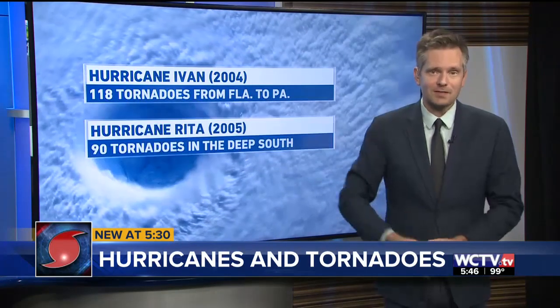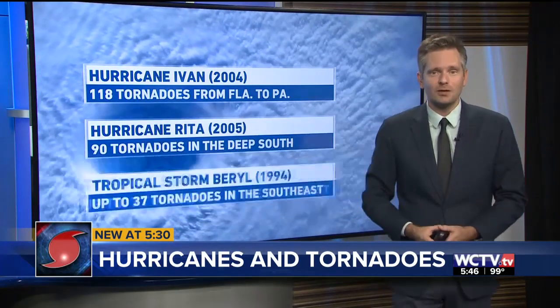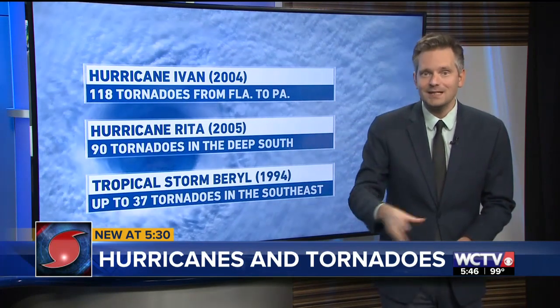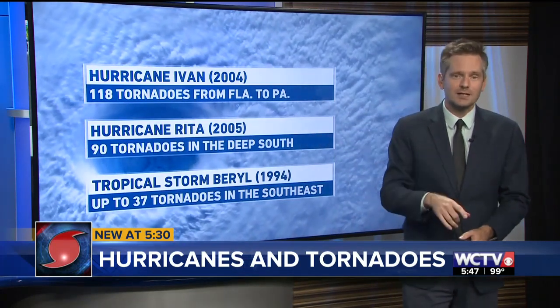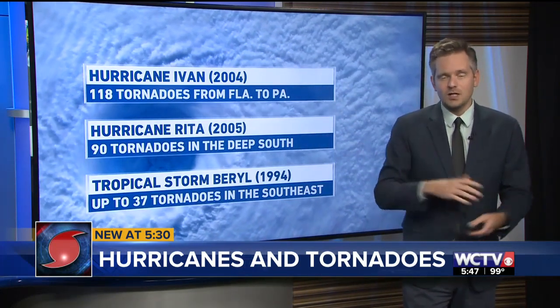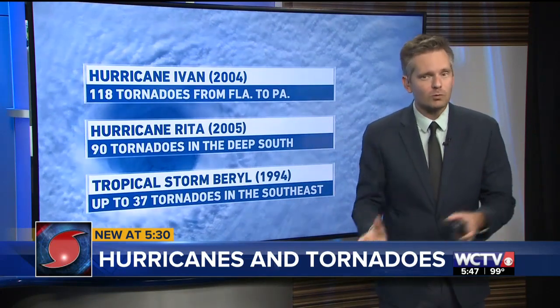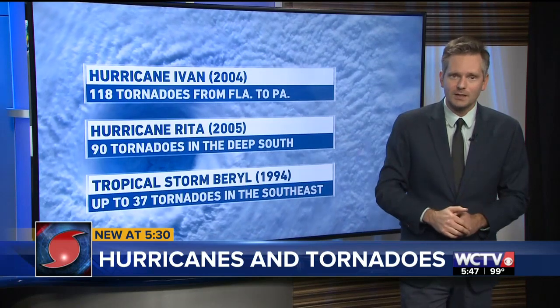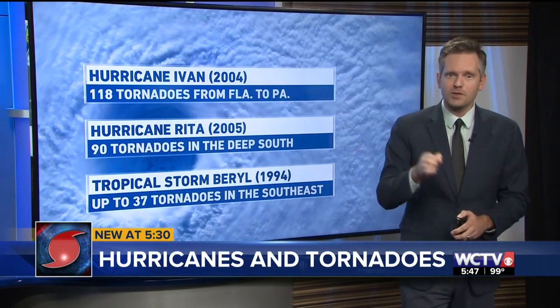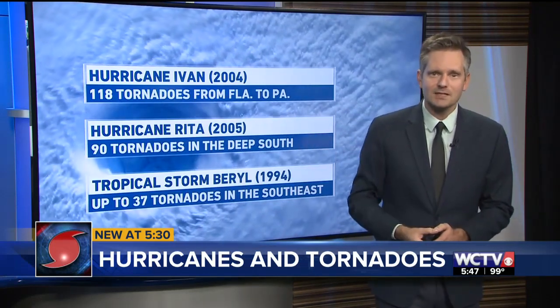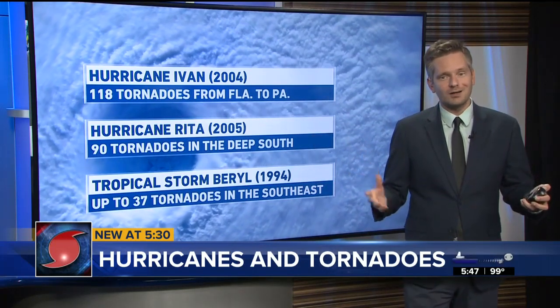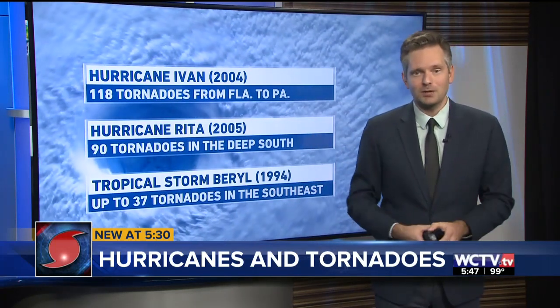There are some prolific tornado makers in the past — specifically Hurricane Ivan in 2004, which created up to 118 tornadoes from Florida to Pennsylvania. Then a year later, Hurricane Rita spawned 90 tornadoes across the deep south. And one notable one just two hours west of the main landfall, Tropical Storm Barrel in 1994, produced up to 37 tornadoes in the southeast. So what we saw with Hurricane Dorian so far is not too much of a complete surprise.